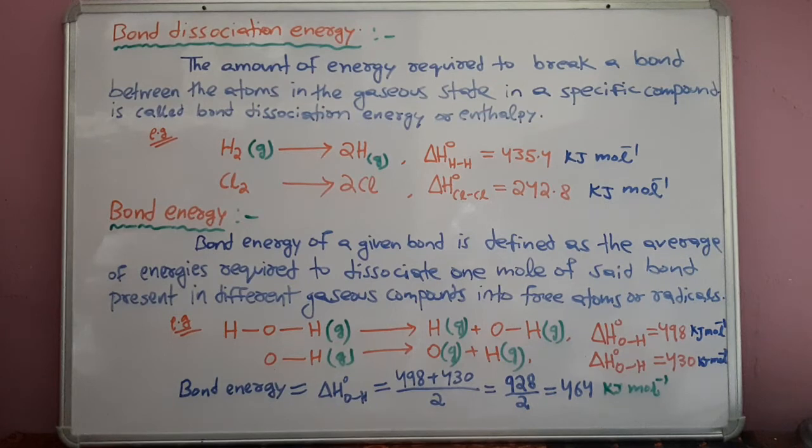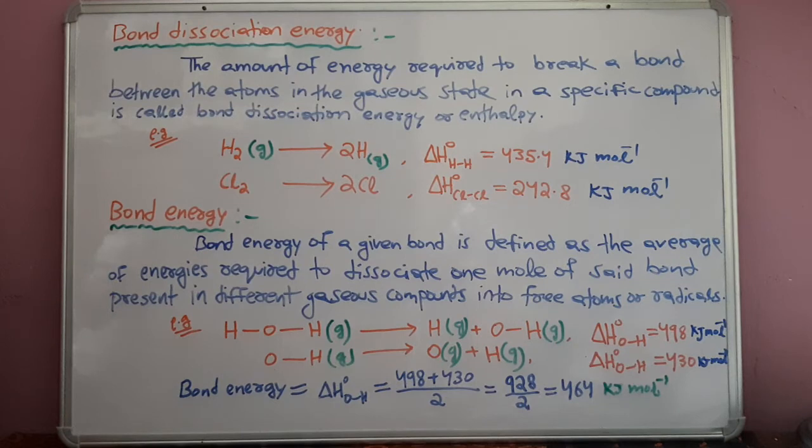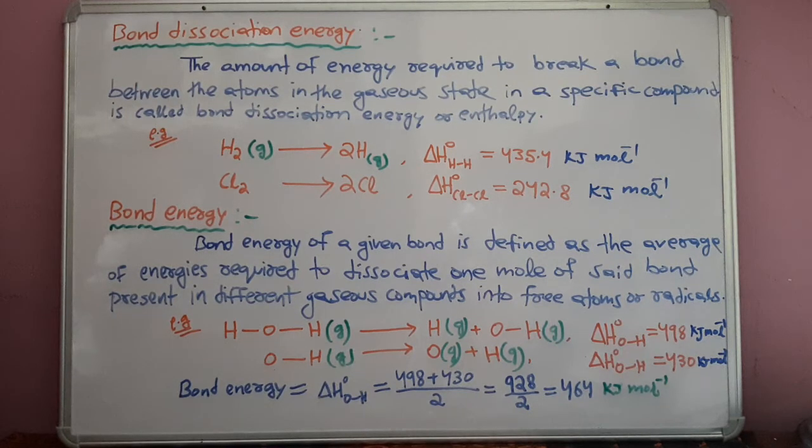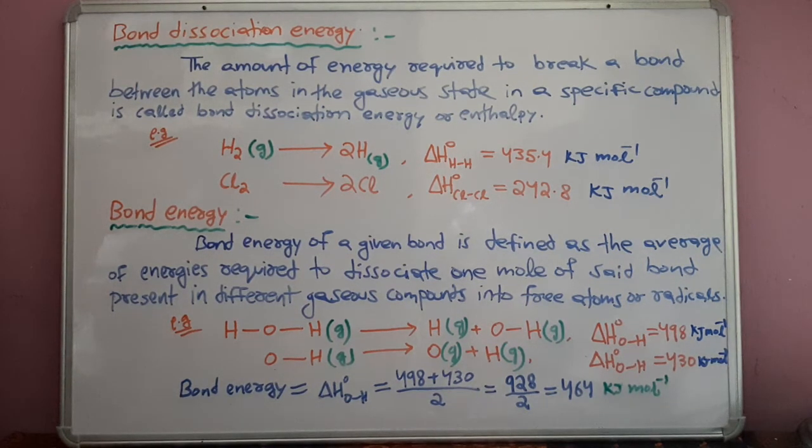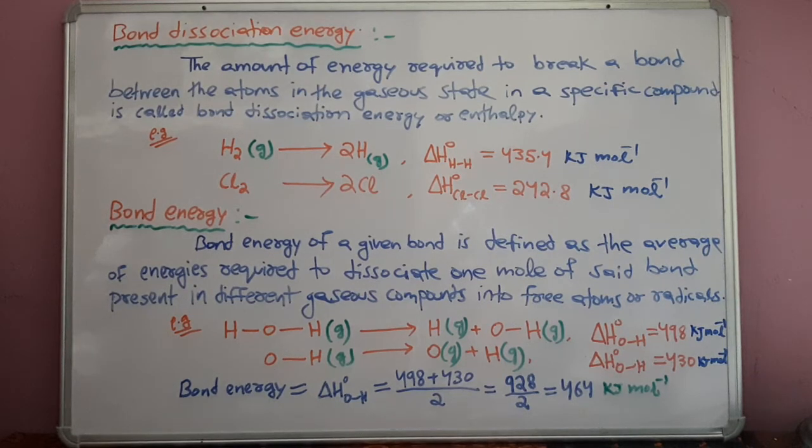We have the bond dissociation energy of first OH bond, which is 498 kJ. Next, the second OH bond break. So the average is 498 plus 430 divided by 2 equal to 464 kJ mol inverse.